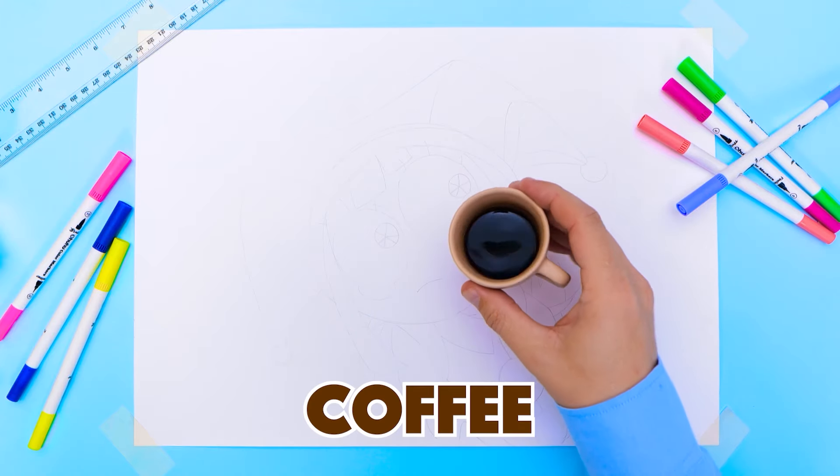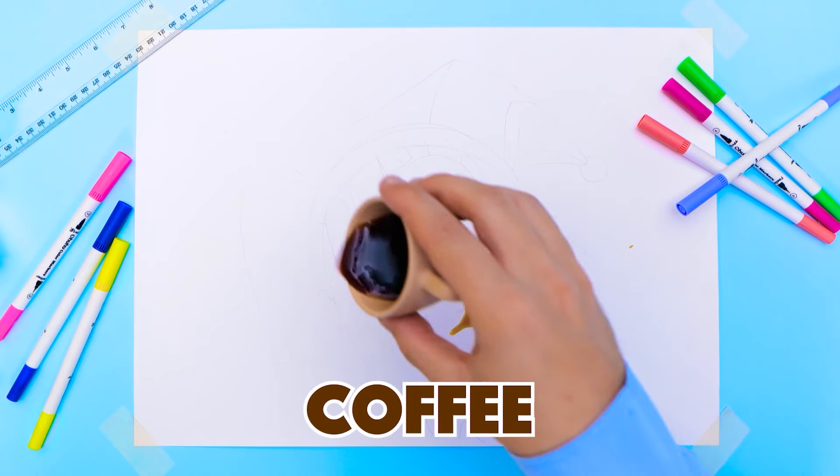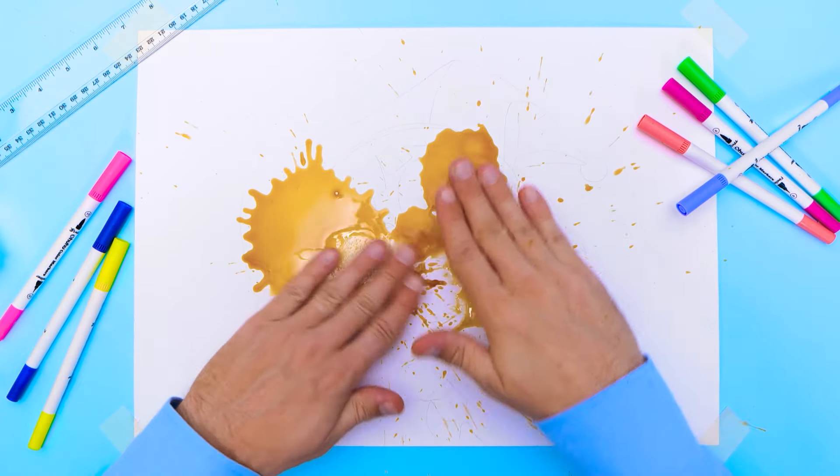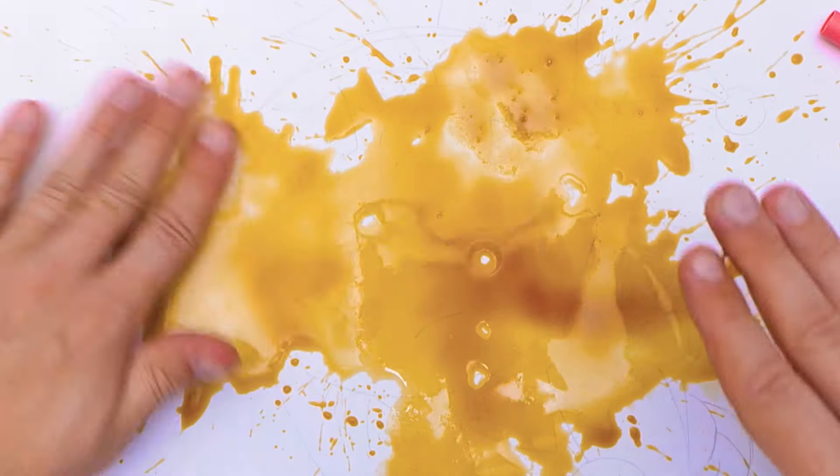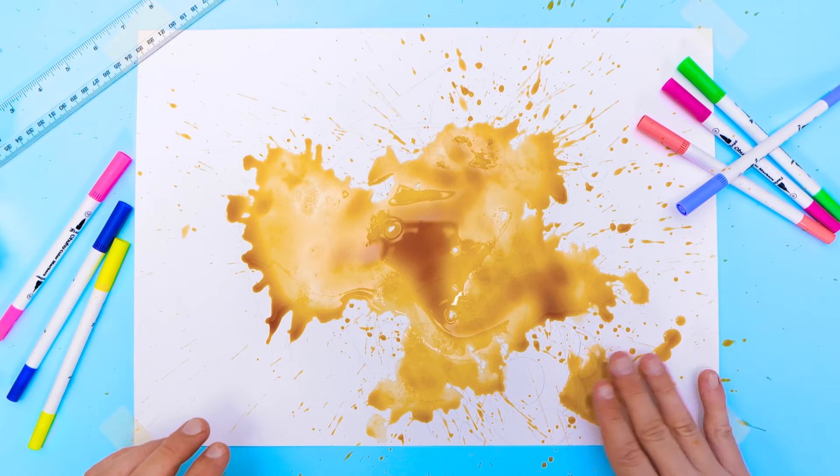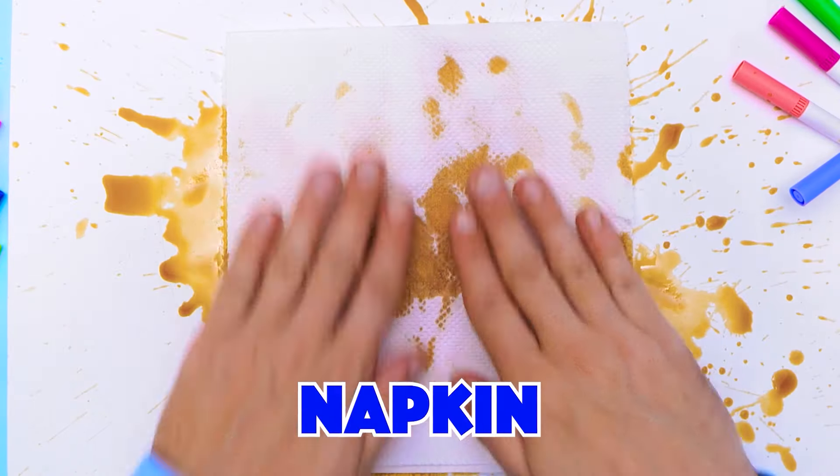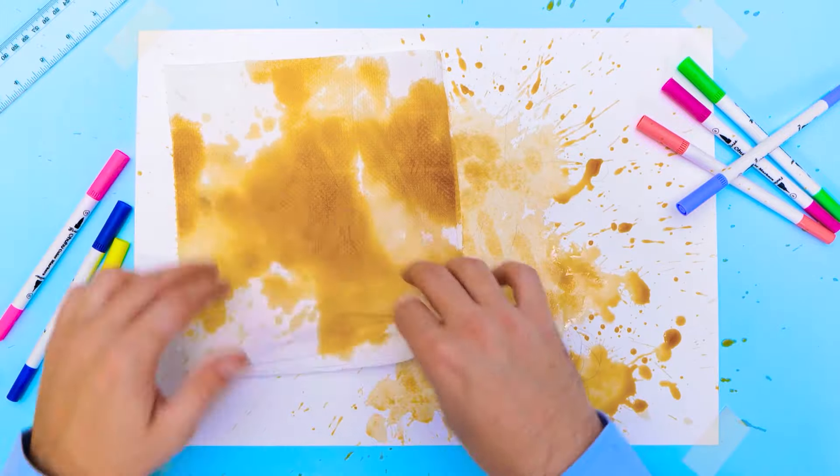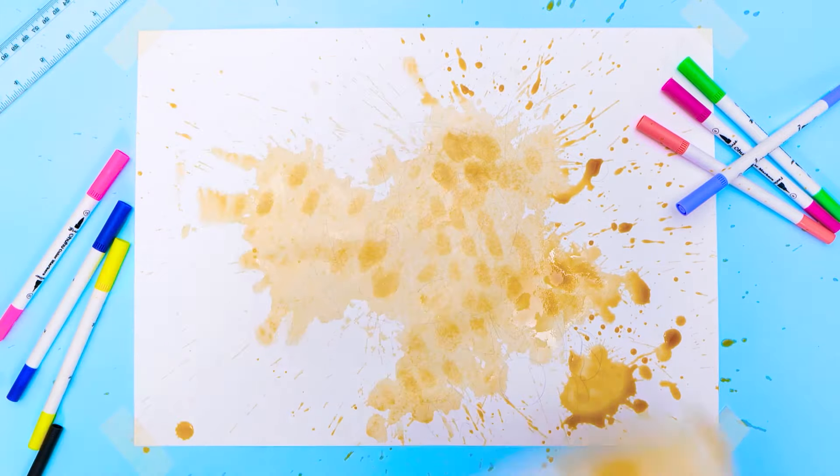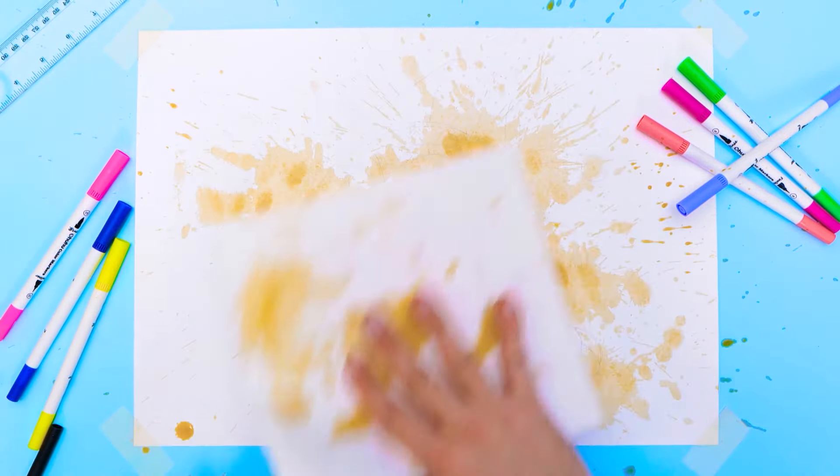First, I'll spill coffee onto some paper. This is so much fun. Then, I'll splish, splash, sploosh it all around. But don't worry, I asked for permission first. Now, I need a napkin to remove all the liquid. Dab, dab, dab!